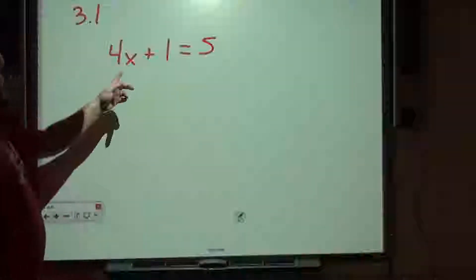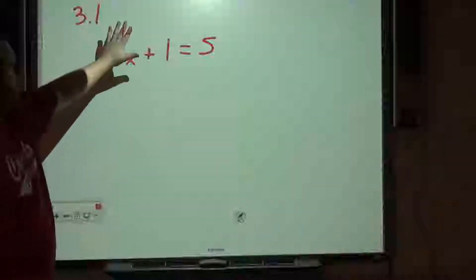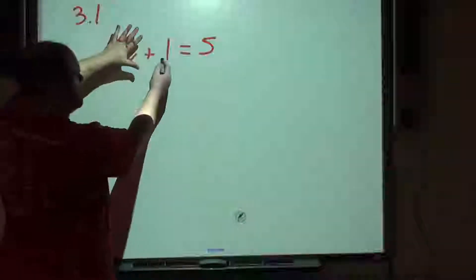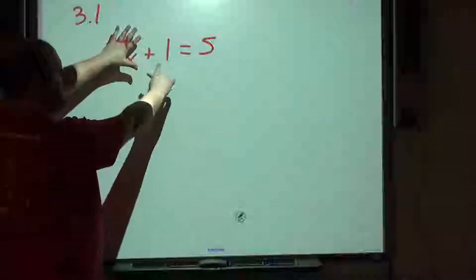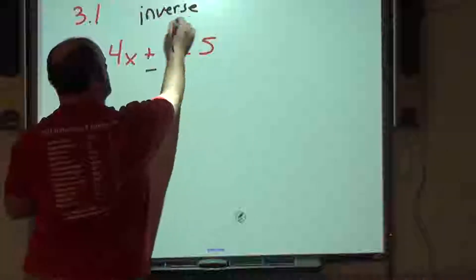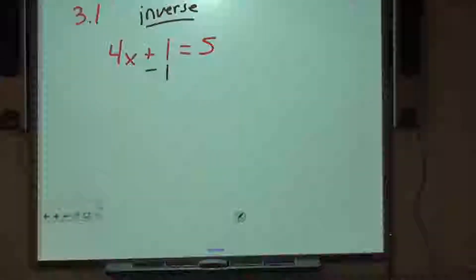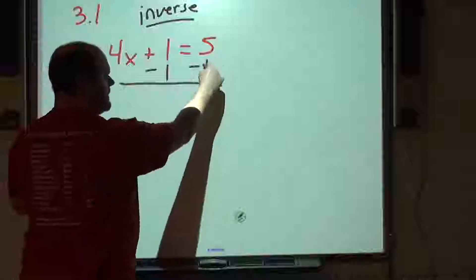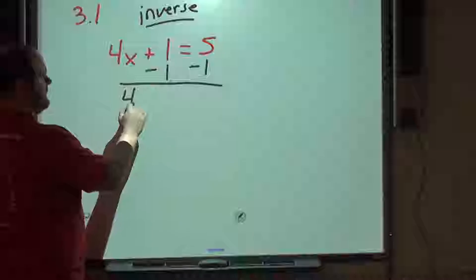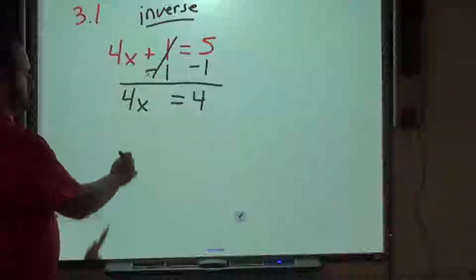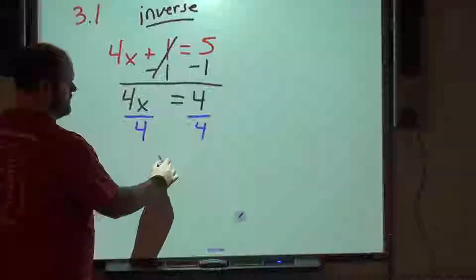The first equation — we want to get x by itself. Cover up that x and the coefficient in front. We need to move the attachment over first. If it's added, we do the inverse operation — addition and subtraction are inverses, multiplication and division are inverses. To move that 1, we subtract it; 4x remains, the 1s cancel, and 5 minus 1 is 4. Now divide by 4 on both sides, and x equals 1.